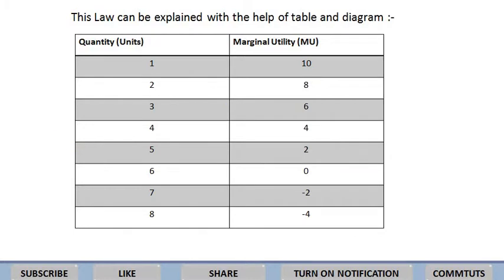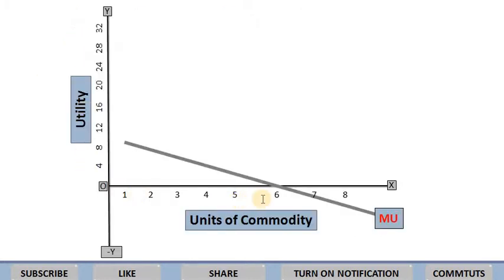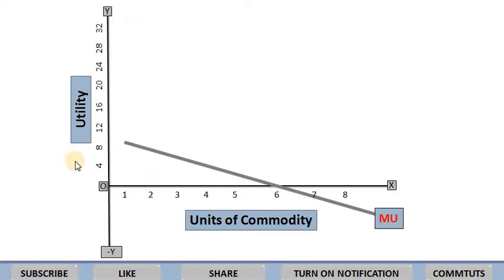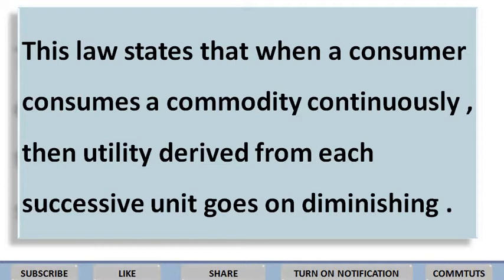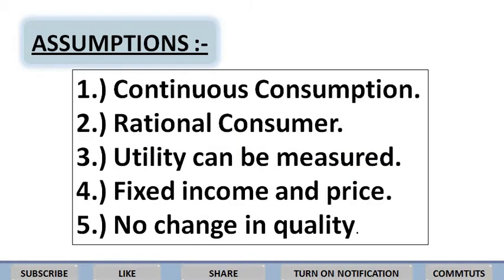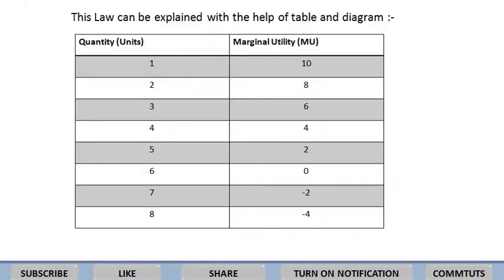यही points consider करके diagram बनाओगी — y-axis पे utility show करोगी और x-axis पे commodity consumed। Table के points लेकर diagram बनाओगी, तो marginal utility curve इस तरह बनेगी। Exam में इस question को ऐसे present करना है: सबसे पहले law का meaning लिखो कि यह law क्या state करता है, फिर किसने दिया, another names, फिर assumptions explain करो, फिर table बनाओ और ऊपर लिखो 'This law can be explained with the help of table and diagram।'